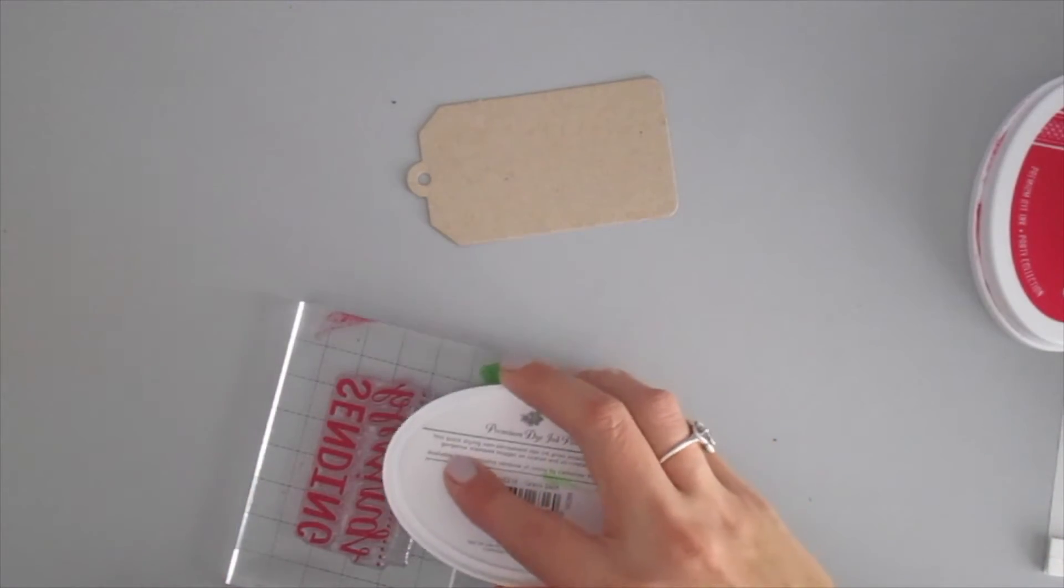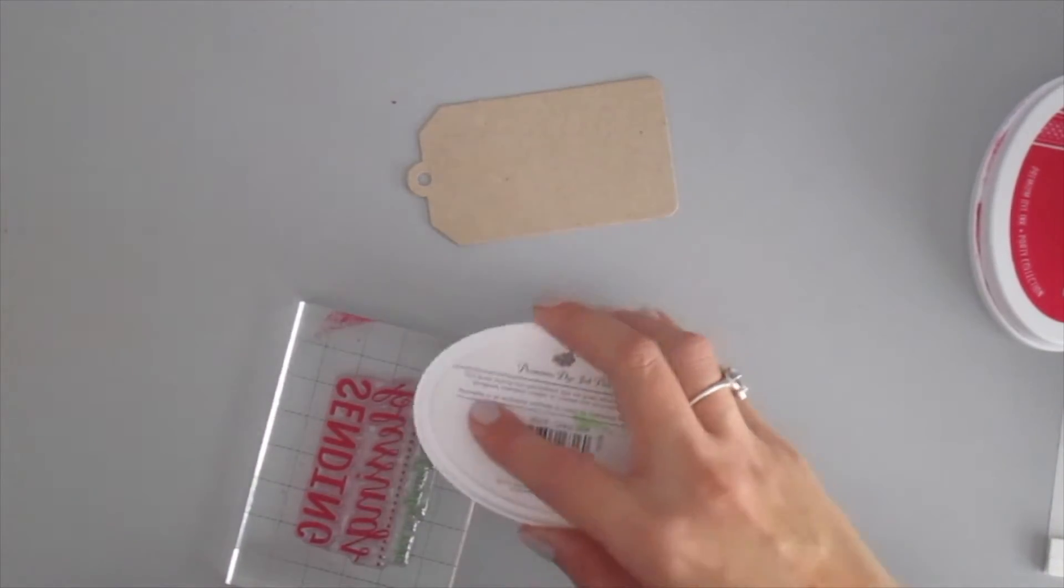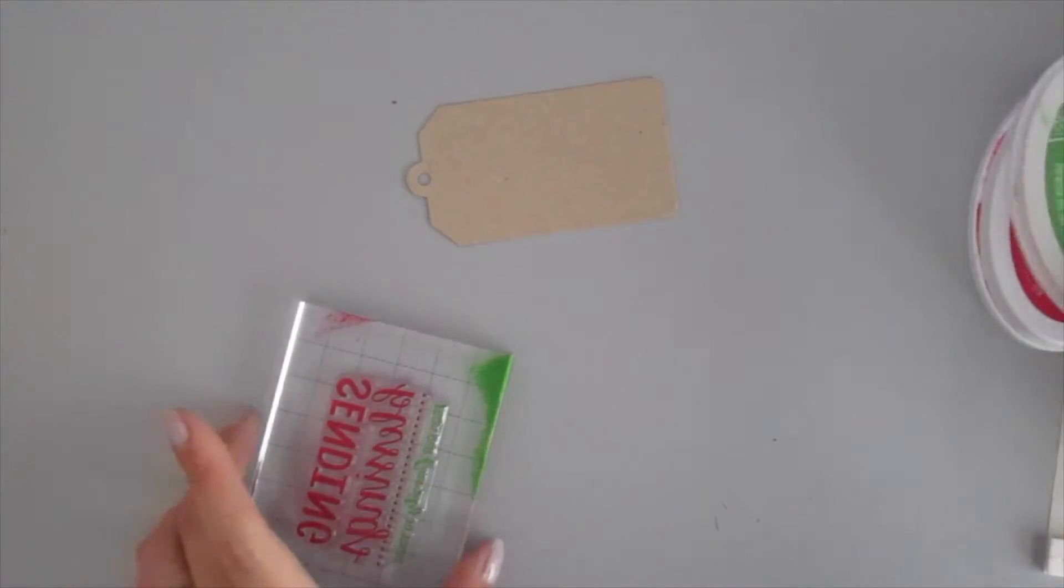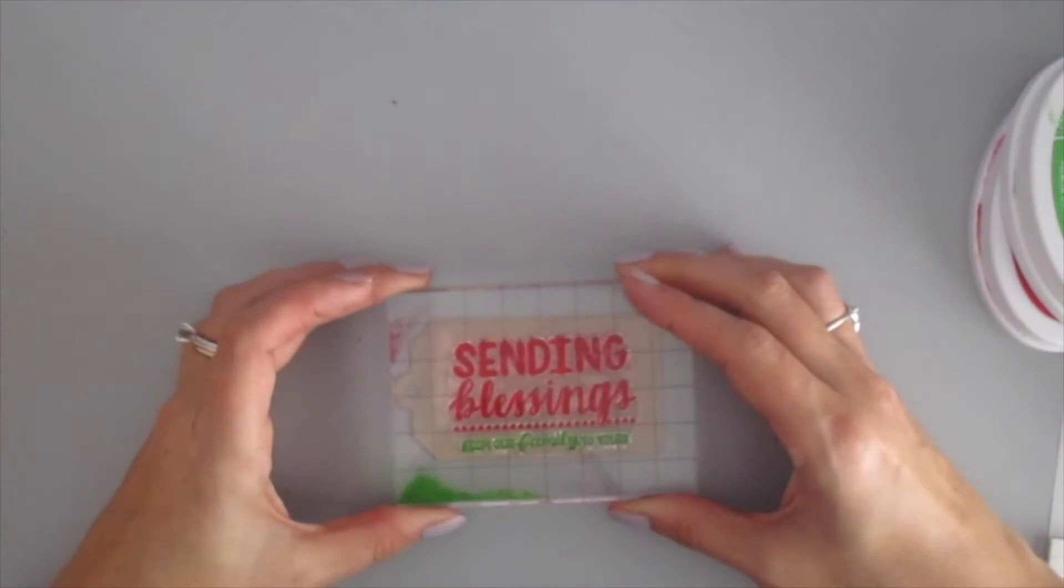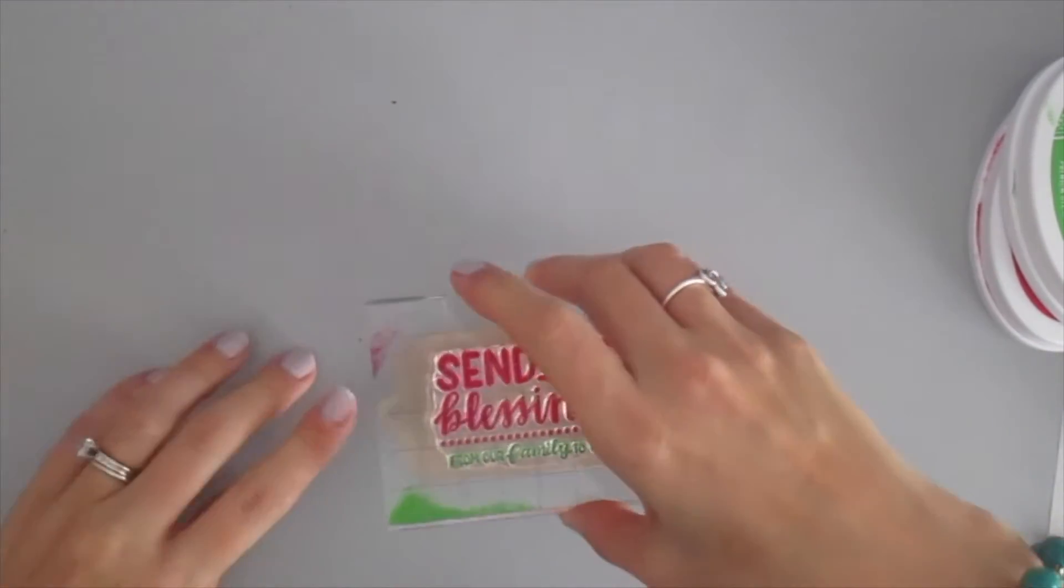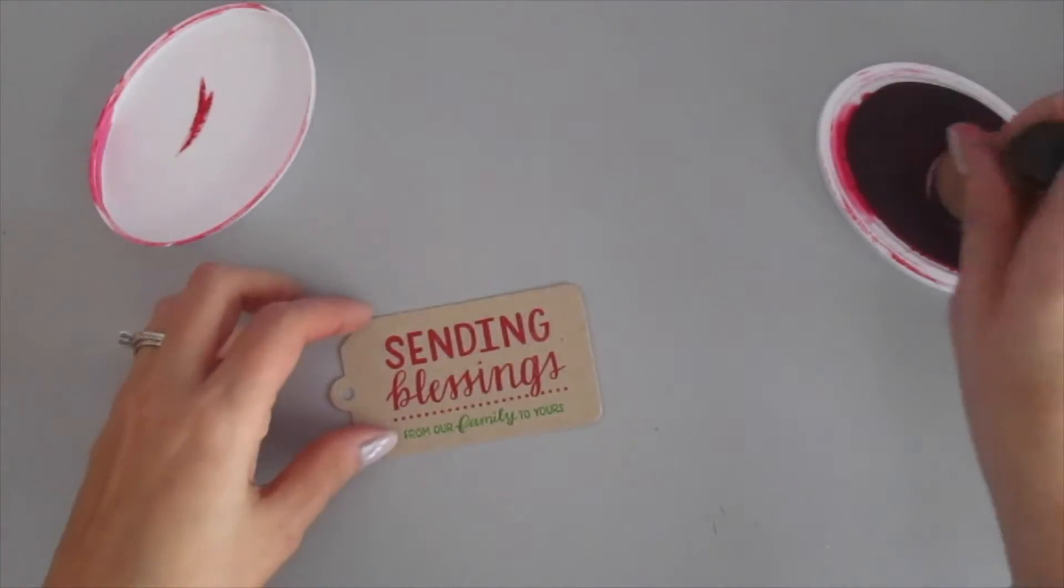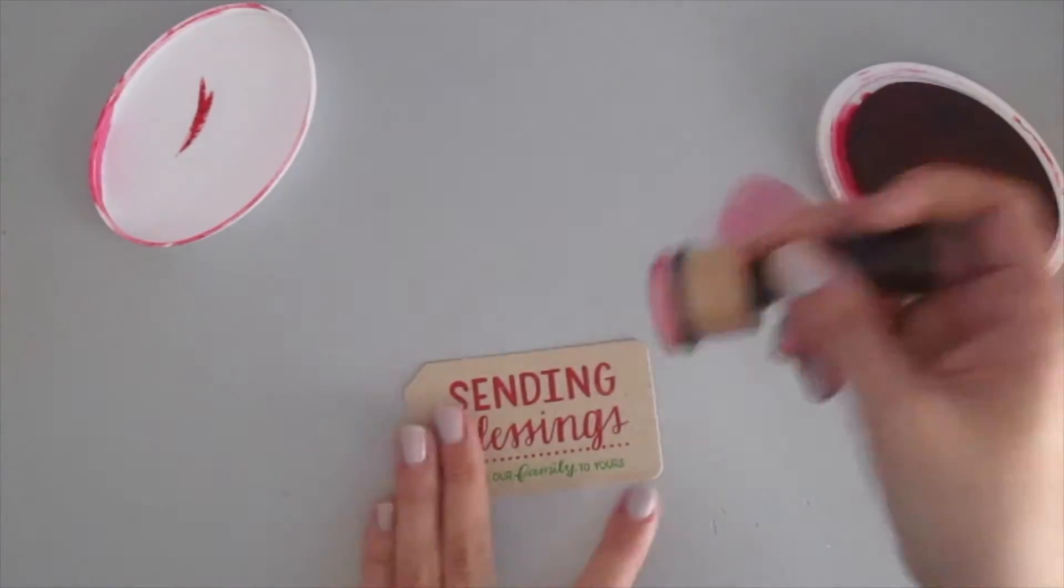So what I did for this one is I wanted to use two different colors for the different lines of text so I just masked one off with a post-it note and then gently came in with the other and tapped it on. And I decided to use craft for this too because I'm really kind of into the rustic type style for Christmas this year.